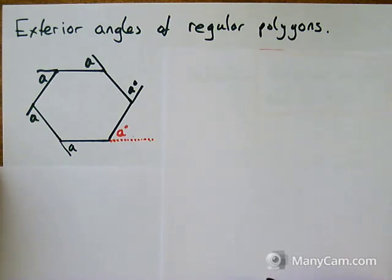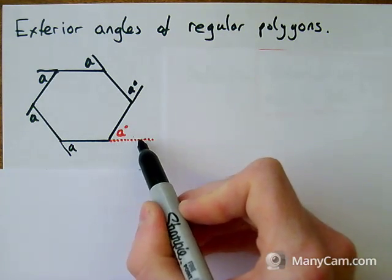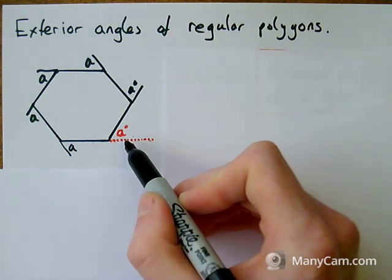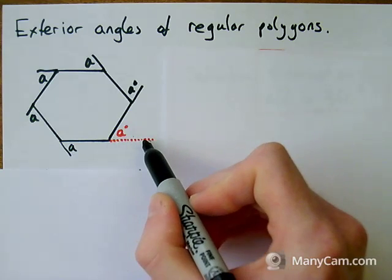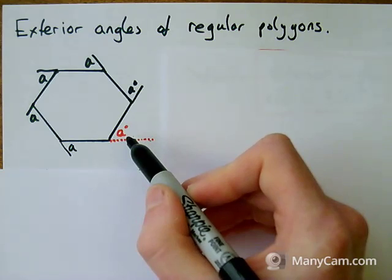Exterior means outside, so it's the angle on the outside of the shape. So this red one here, if I extended this line across here, an exterior angle is the angle between that line I extended and the next side. So angle A here is my exterior angle.